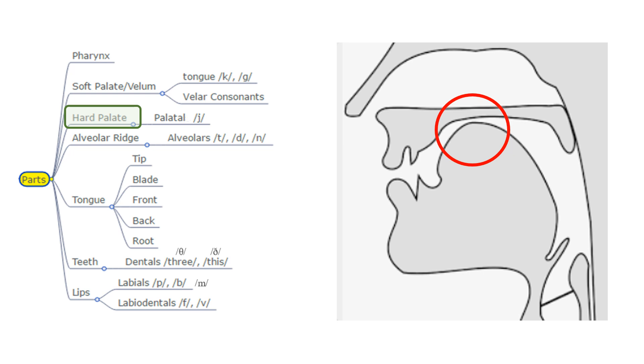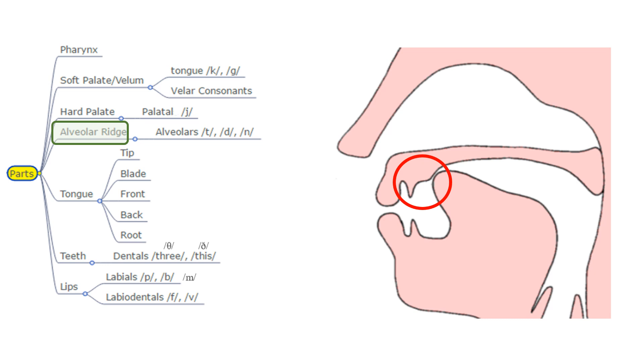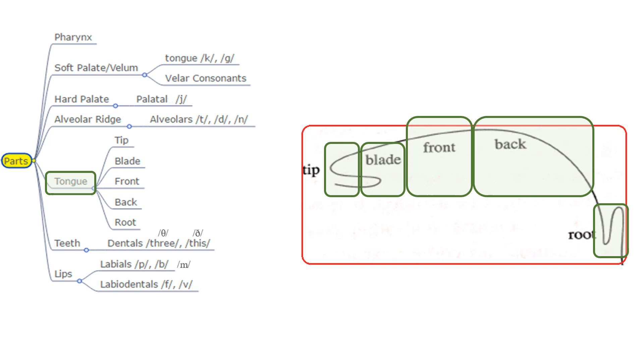The hard palate, the roof of the mouth. This sound is called palatal. The alveolar ridge, just behind the upper teeth. It has a slightly rougher surface than the hard palate. These sounds are called alveolars.